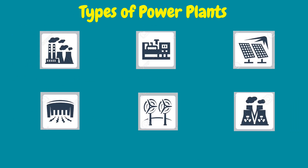Electricity is produced in plants capable of generating electrical energy from primary energy sources. These primary energy sources may be renewable or non-renewable. Non-renewable sources are coal, natural gas, and oil.